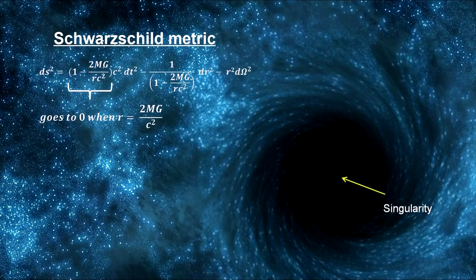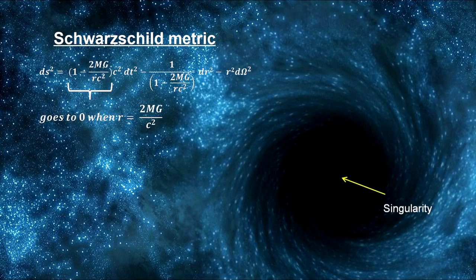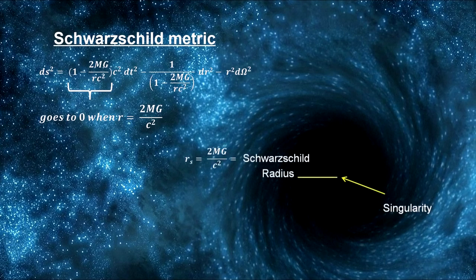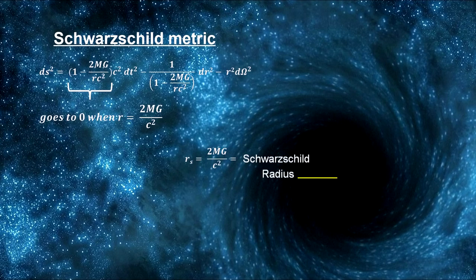The Schwarzschild metric showed that if the mass of a body should contract to a small enough radius, it could capture light itself. This radius is known as the Schwarzschild radius and forms a sphere known as the Event Horizon.